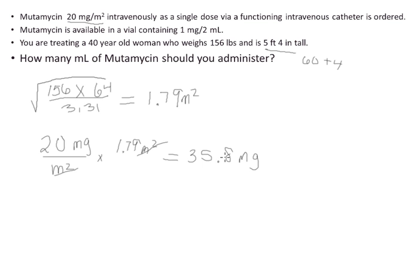Now, I'm ready to calculate the milliliters to administer. Problems in milliliters can be calculated using the nursing formula, desired over have times quantity. You can use a proportion, or you can use dimensional analysis. For this problem, I'm going to use the nursing formula.